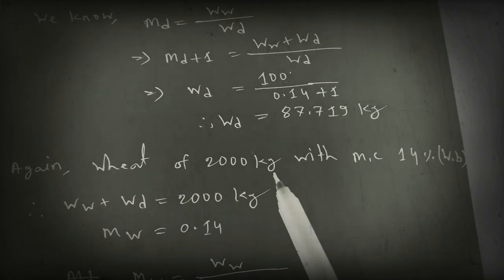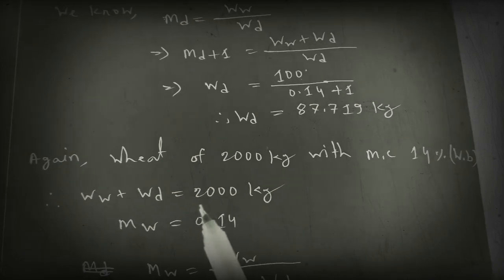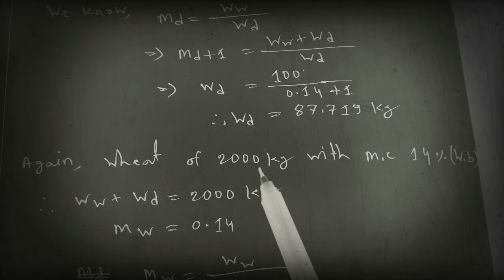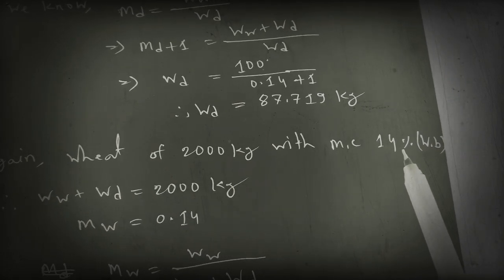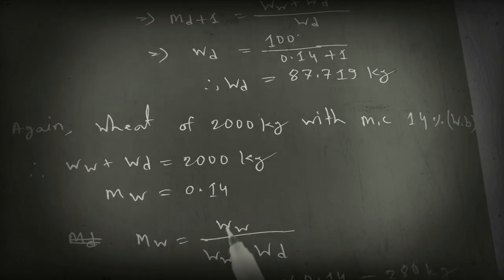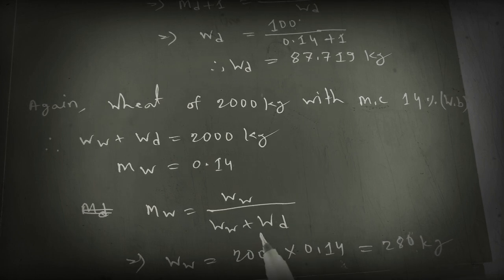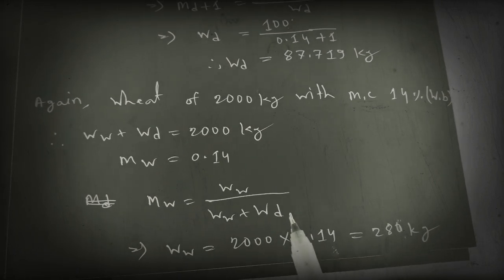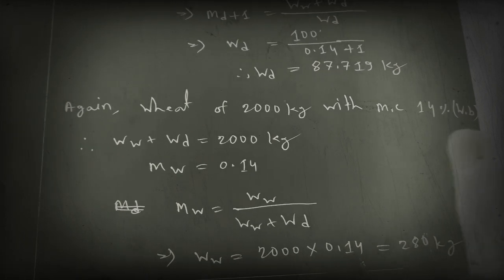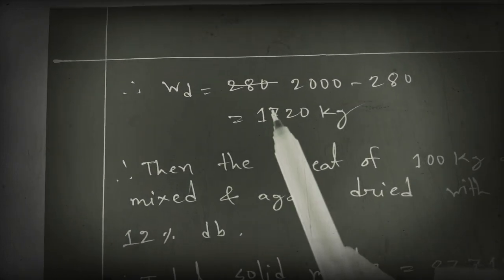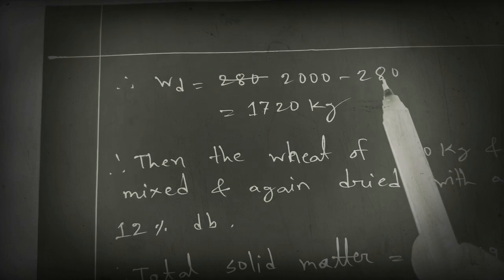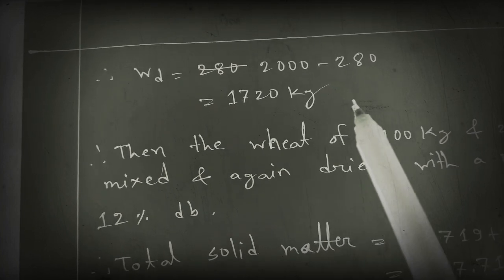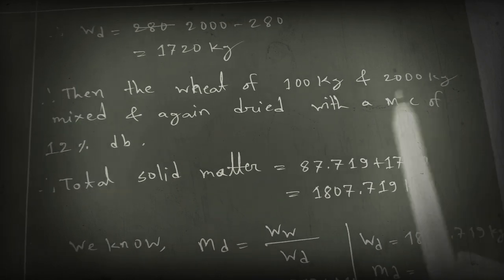For 2000 kg of wheat with moisture content 14% weight basis: WW plus WD equals 2000 kg, and MW equals 0.14. We know MW equals WW divided by (WW plus WD), so we can get WW equals 280 kg. Then WD equals 2000 minus 280, giving us solid matter from 2000 kg of wheat as 1720 kg.